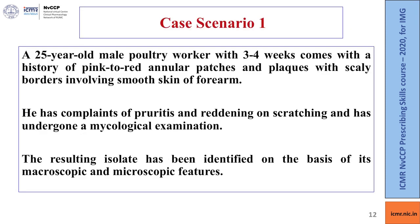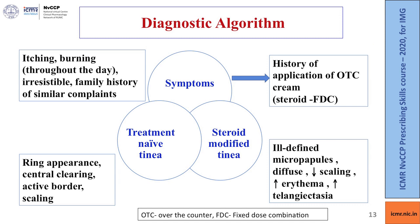Case 1: A 25-year-old male poultry worker with three to four weeks of pink-to-red annular patches and plaques with scaly border on smooth skin of the forearm, with complaints of pruritus and reddening on scratching, was referred for mycological examination. If the appearance is ring-shaped with central clearing, active border, and scaling, the diagnosis is tinea corporis.